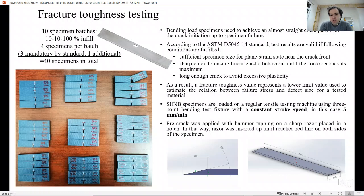As a result, you will have a proper fracture toughness value which represents a lower limit value, used to estimate the relation between failure stress and defect size for a tested material. During our testing on three-point bending test fixture, we used a constant stroke speed of the top pin, which was set at 5 mm per minute.